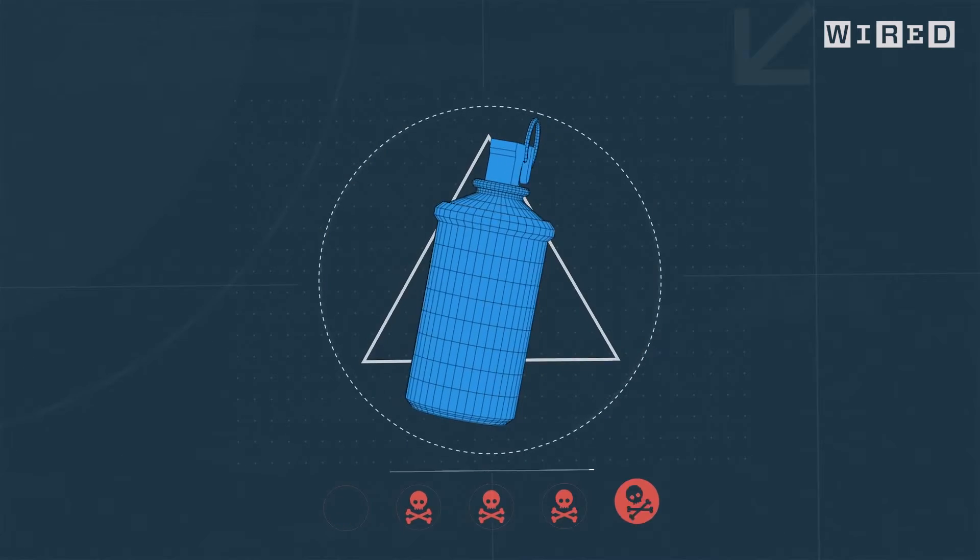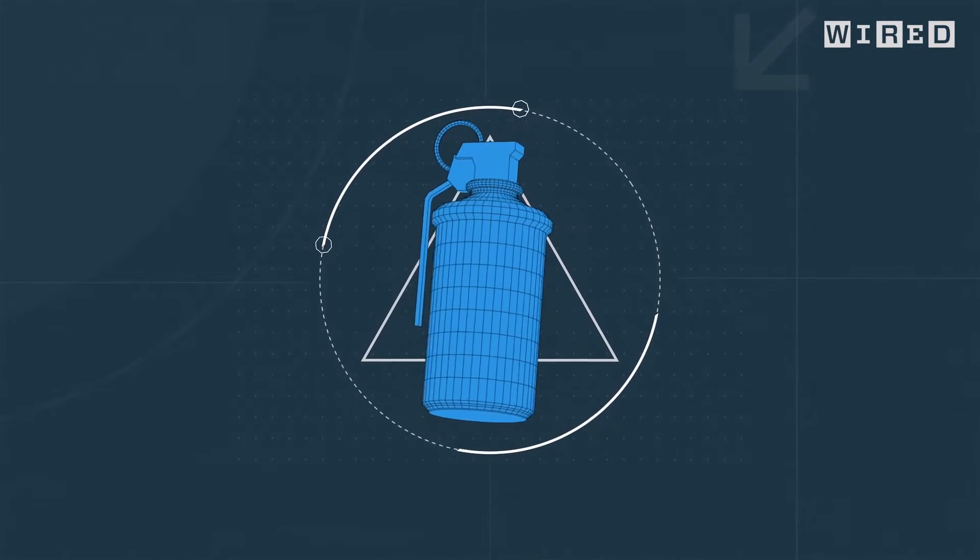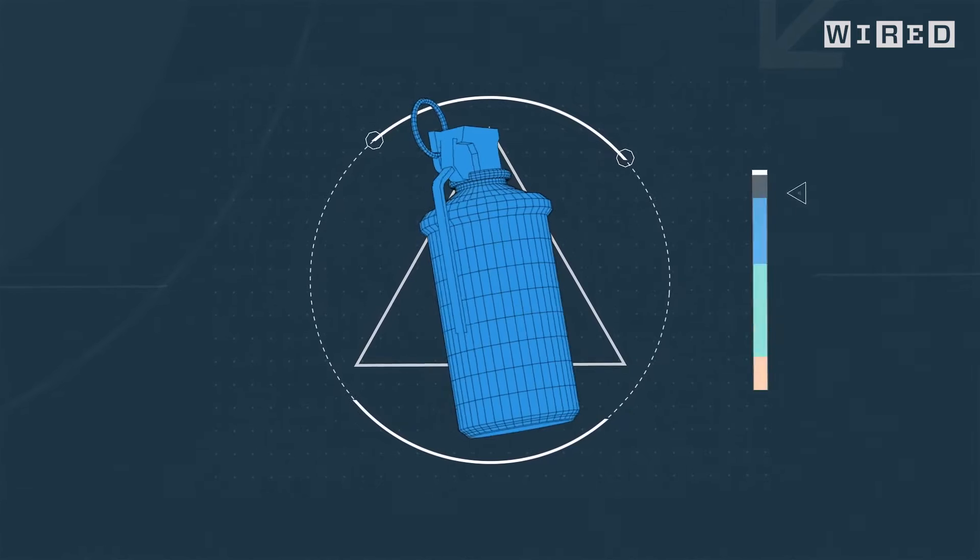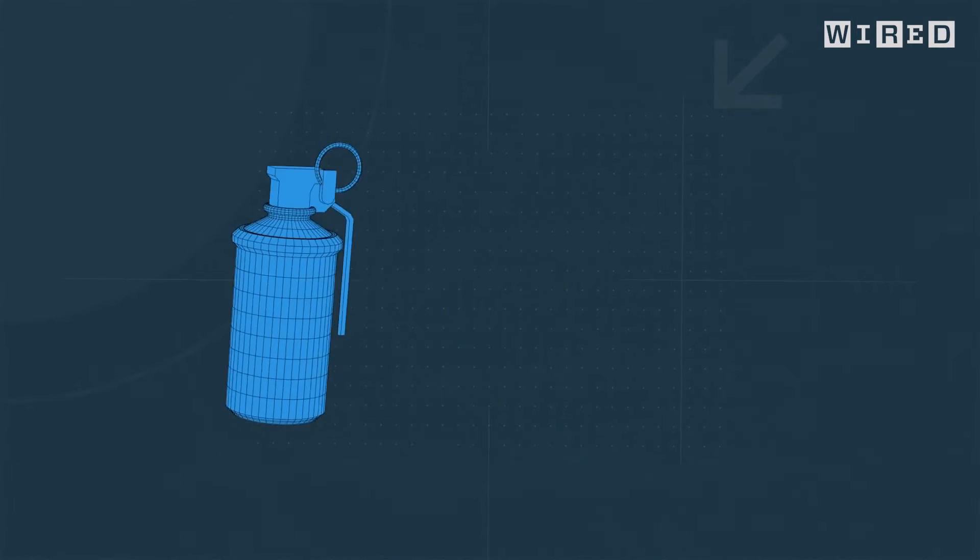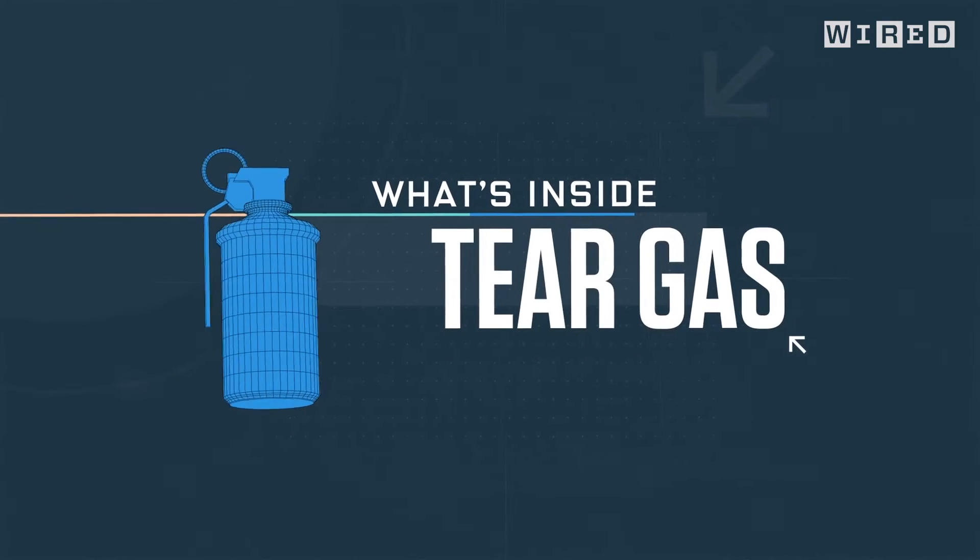In World War One, toxic gas was a weapon of choice. Today, law enforcement uses a less potent recipe to pacify a room or control a crowd. But what's inside a can of tear gas?